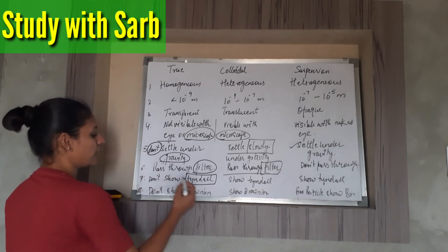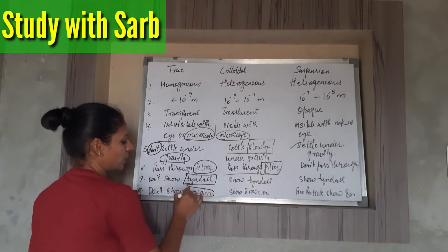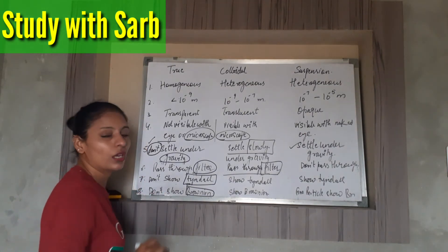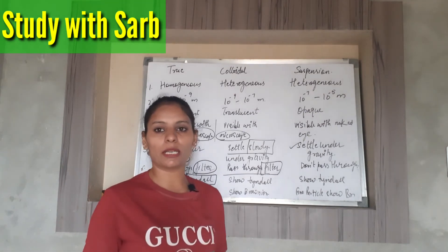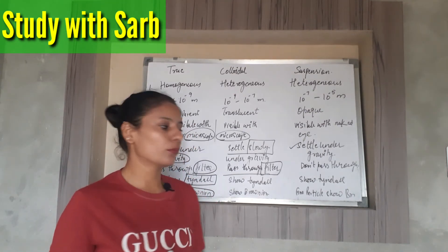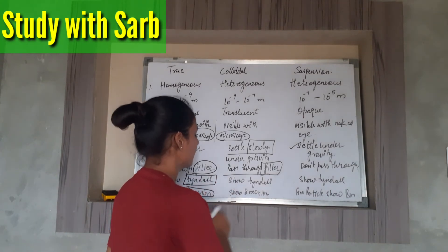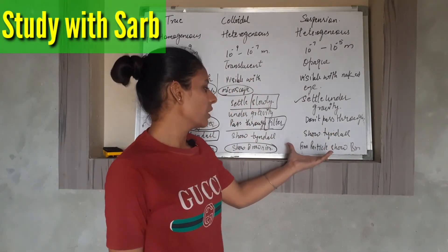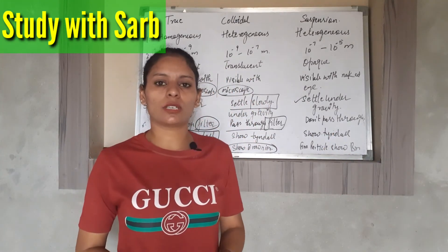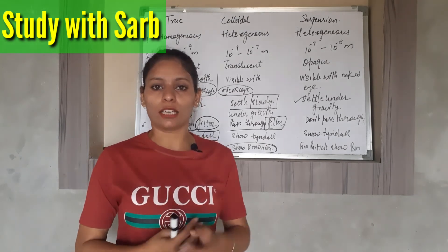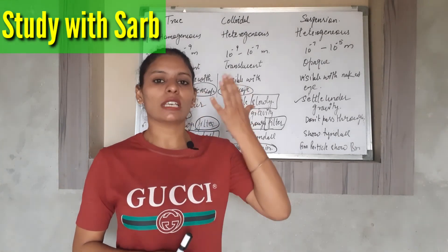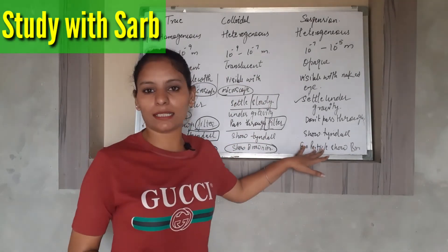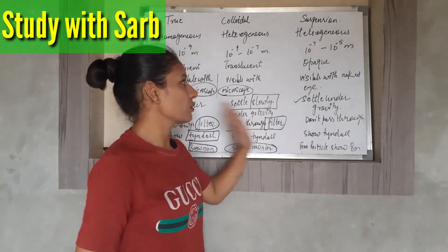Regarding Brownian movement — true solution does not show Brownian movement, which is also why there is no settling under gravity. Colloidal particles do show Brownian movement, which means moving in a zigzag direction on their own. In the case of suspension, only the fine and light particles show Brownian movement, because heavy particles directly settle down — so only fine particles exhibit Brownian movement.